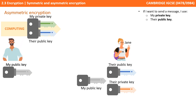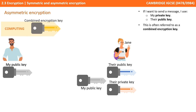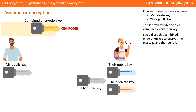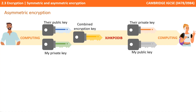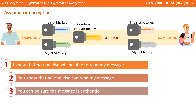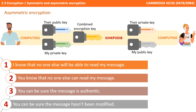This brings us to the complete solution behind asymmetric encryption. If I want to send a message, I would use my private key and my copy of Jane's public key — often referred to as a combined encryption key — to encrypt the message and send it on its way to Jane. To decrypt the message, Jane would then need to use her private key and her copy of my public key. The beauty here is we now know four things: no one else will be able to read my message; Jane knows that no one else can read it; Jane knows the message is authentic; and finally, she can also be sure the message hasn't been modified in transit.